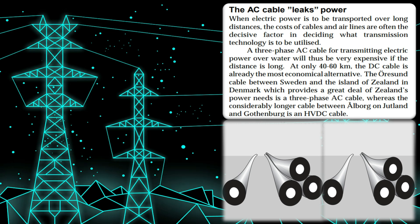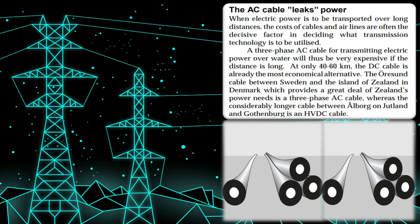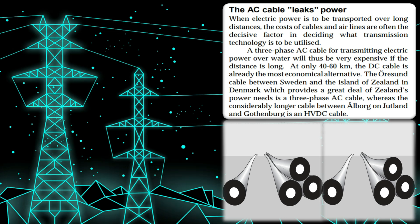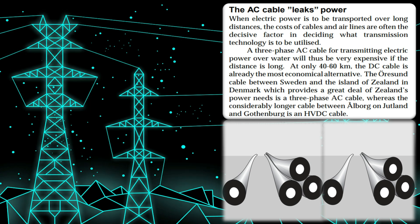For HVAC, the two AC systems need to be synchronized in terms of frequency, voltage, and timing. This condition is not applicable for HVDC systems, which means HVDC can adapt to any rated voltage or frequency in an existing grid that is planned to be integrated.